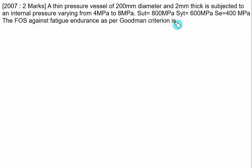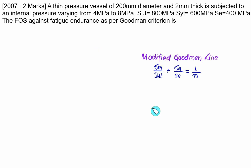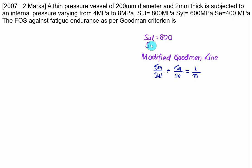A thin pressure vessel of 200 mm diameter and 2 mm thickness is designed based on hoop stress, given by pressure times diameter divided by 2 times thickness. The internal pressure varies from 4 MPa to 8 MPa. We need to calculate the maximum and minimum stresses corresponding to maximum and minimum pressure. SUT, SYT, and SE are given. We use the Goodman criteria. The modified Goodman equation is sigma M divided by SUT plus sigma amplitude divided by SE equals 1 by N. SUT is 800 MPa and SE is 400 MPa.